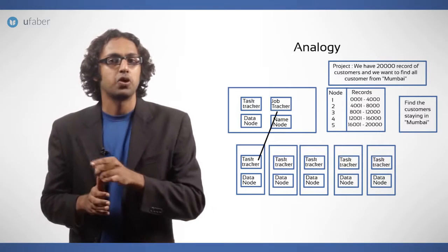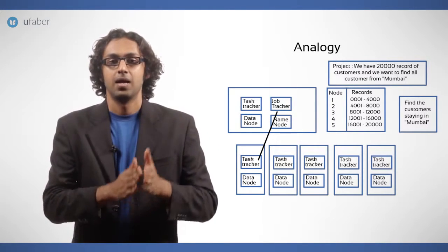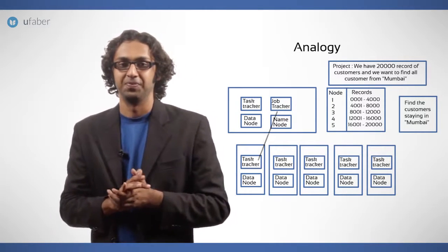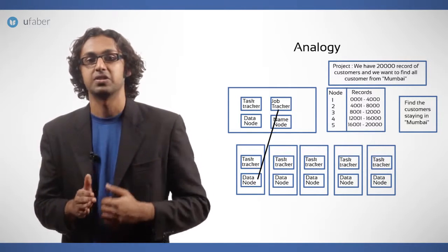The task trackers inform the job tracker the progress and completion of the tasks. Then the job tracker informs the client about the job completion. The client then inquires the location of result to name node and retrieves the same.